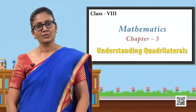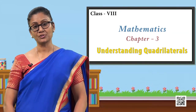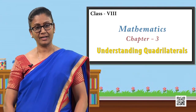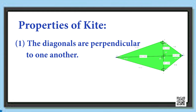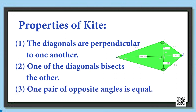So children, you have gone through the video now and should be able to list the properties of a kite one after another. First property: the diagonals are perpendicular to one another. Second property: one of the diagonals bisects the other. Third property: one pair of opposite angles are equal.